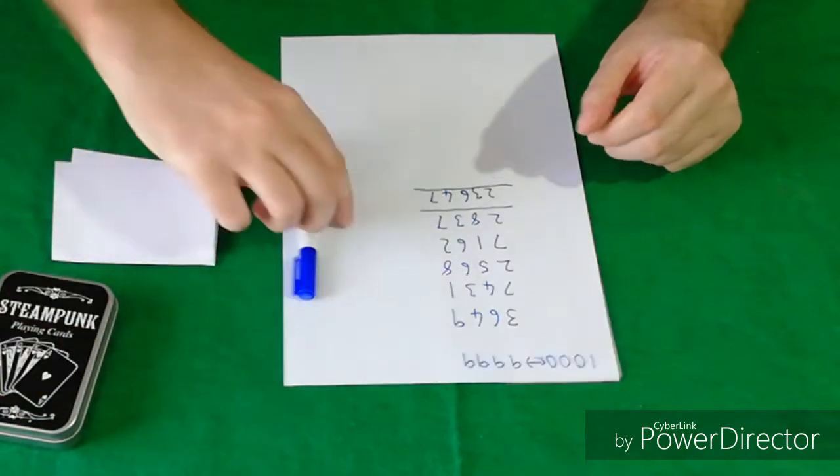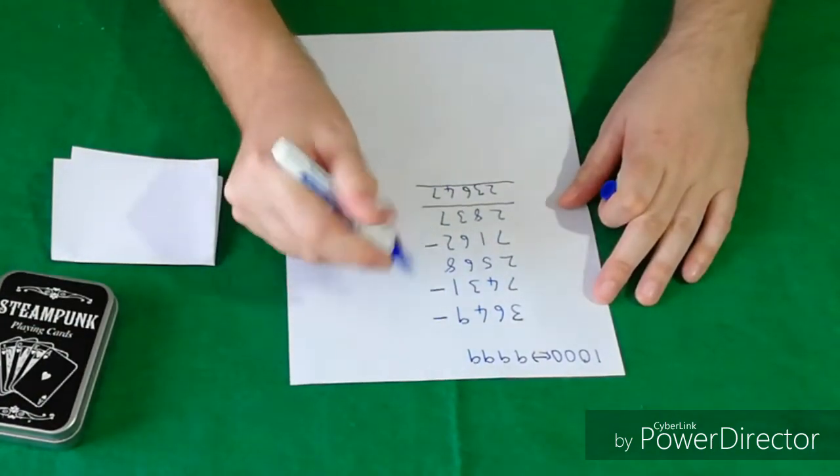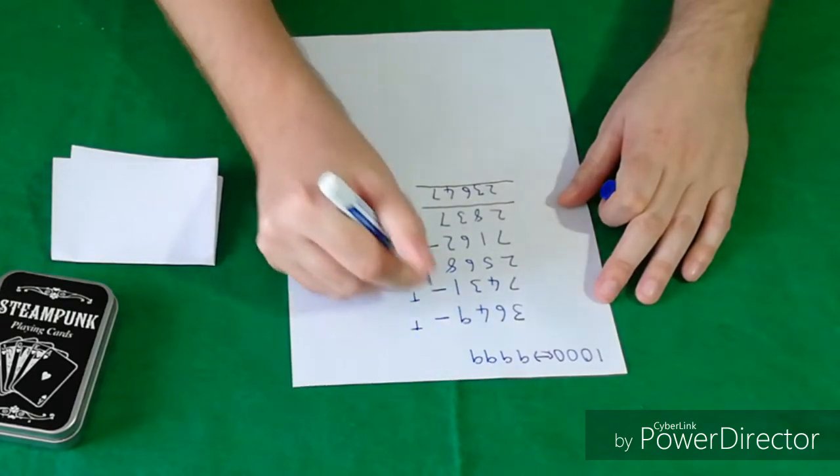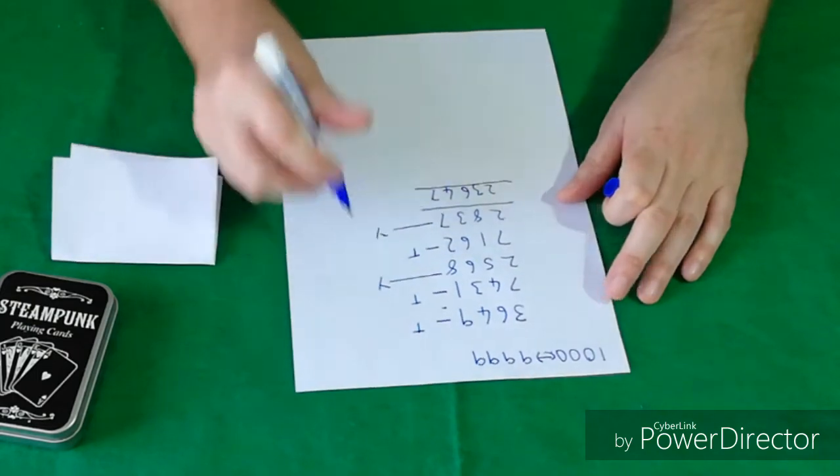And then you tell your spectator that they had a free choice of this number, this number, and this number, that's their number, their number, their number, and this one is your number, and this one is your number.